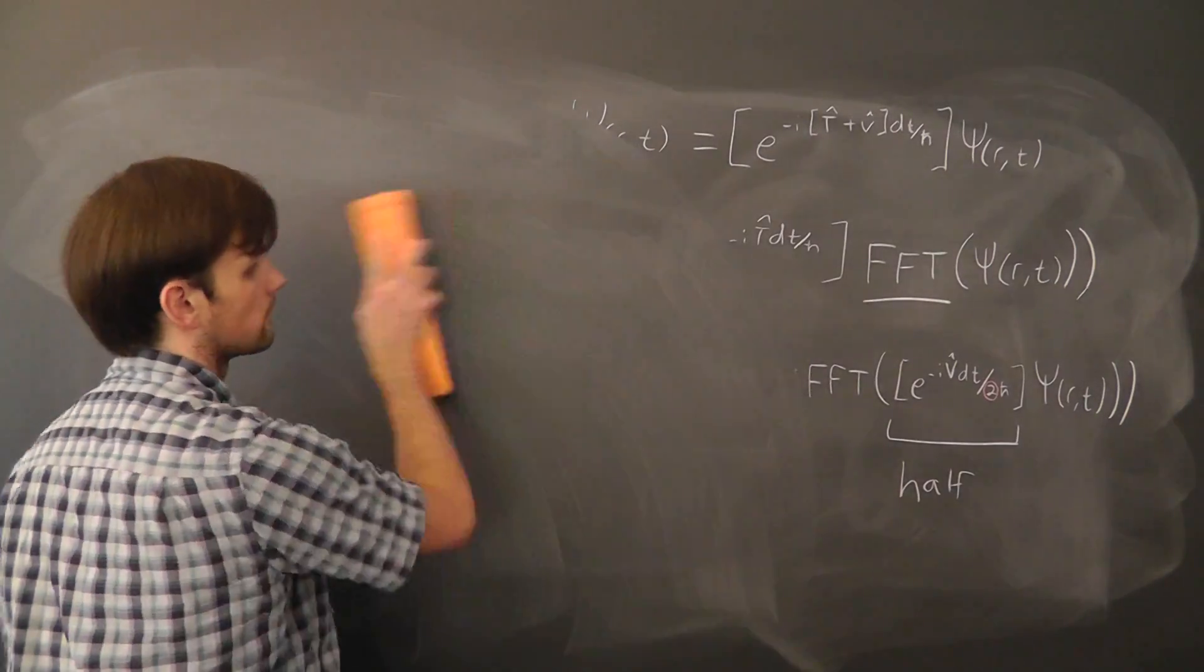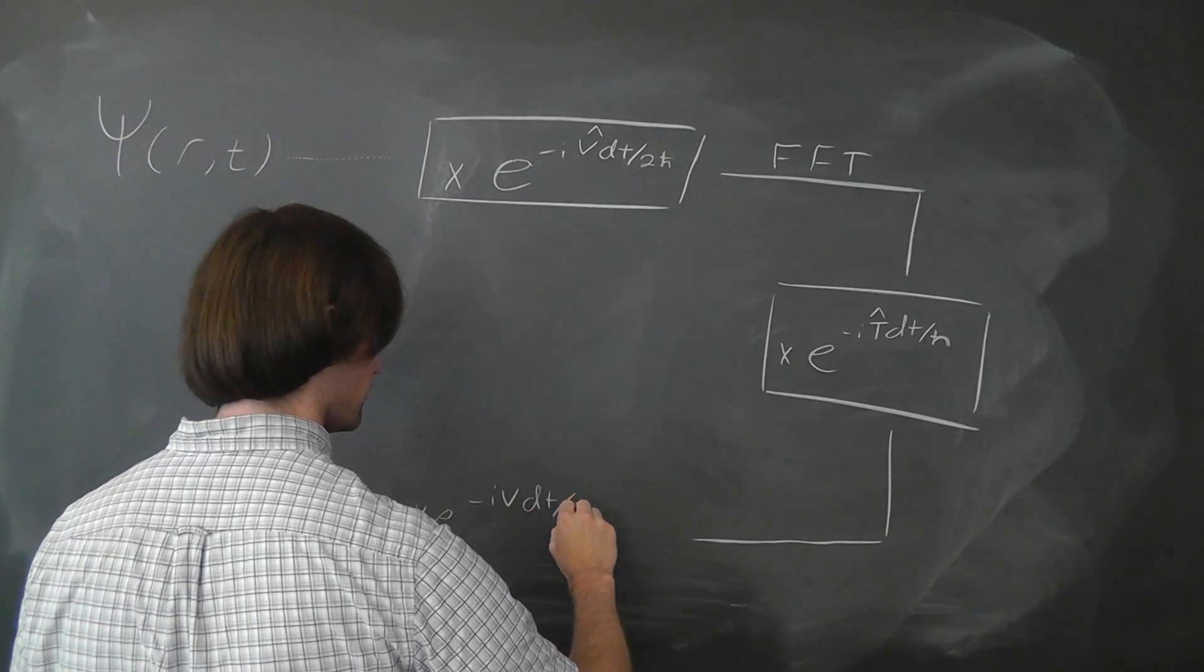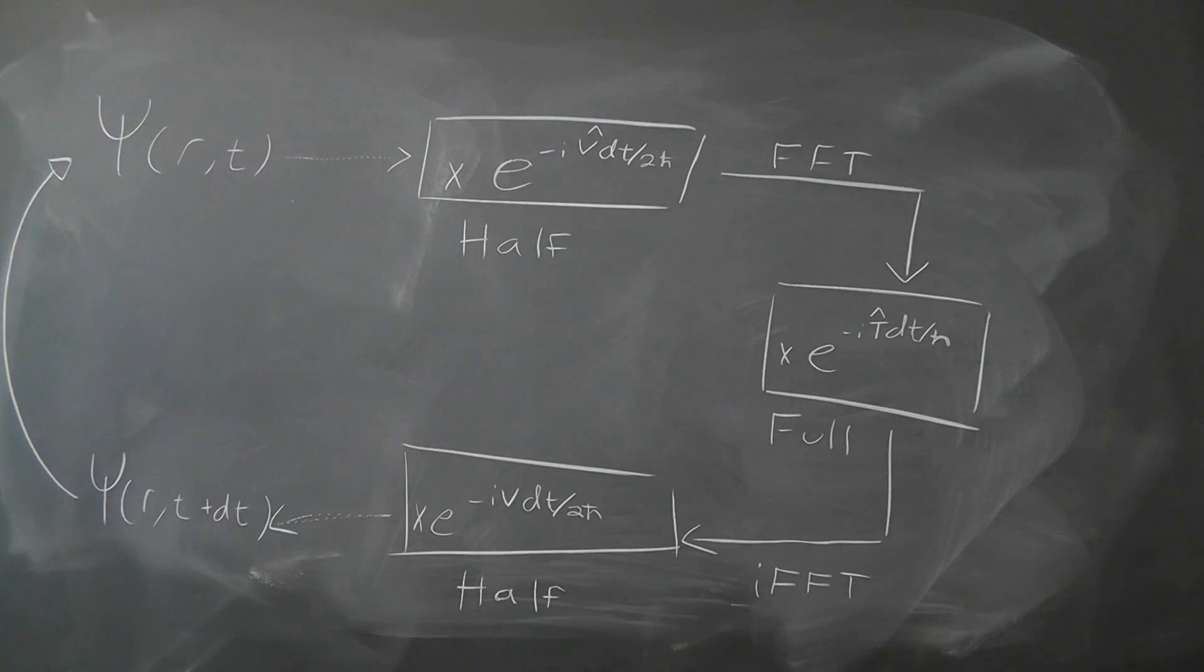It might be easier to see like this. We perform a half step in position space, a full step in momentum space, and then another half step in position space, and we do this every single time step.